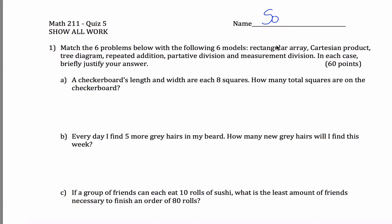All right, here are Quiz 5 solutions for Math 211. So what you have in this first problem is we talked about six different methods of modeling either multiplication or division. We got the rectangular array, the Cartesian product, the tree diagram, repeated addition, partitive division, and measurement division.